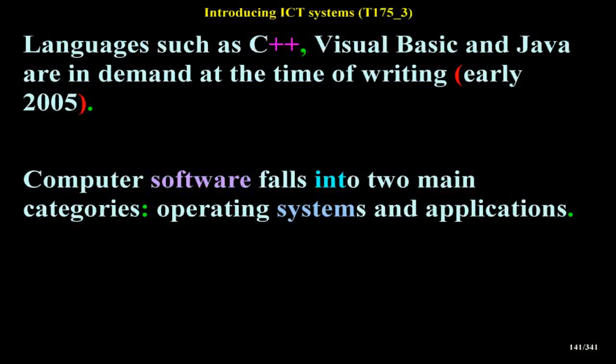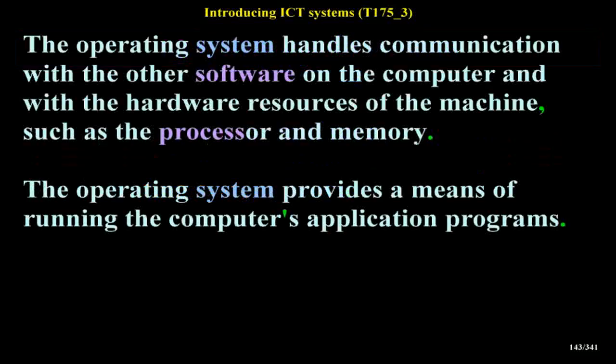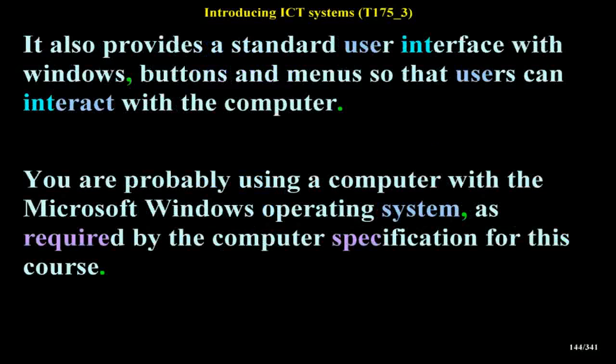Computer software falls into two main categories: Operating Systems and Applications. A computer requires software just to look after itself and to manage all its components — this is called the operating system. The operating system handles communication with the other software on the computer and with the hardware resources of the machine, such as the processor and memory. It also provides a standard user interface with windows, buttons and menus so that users can interact with the computer.